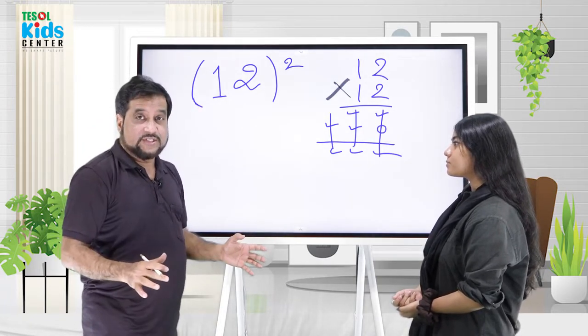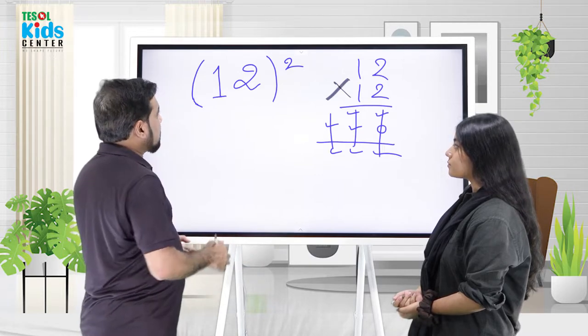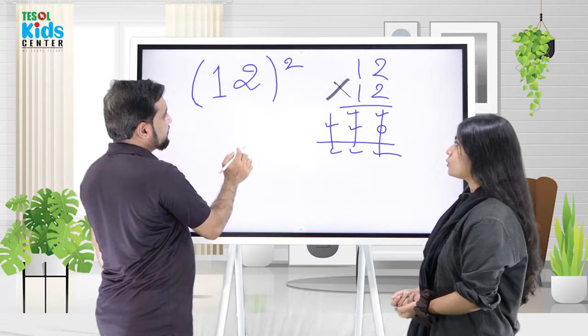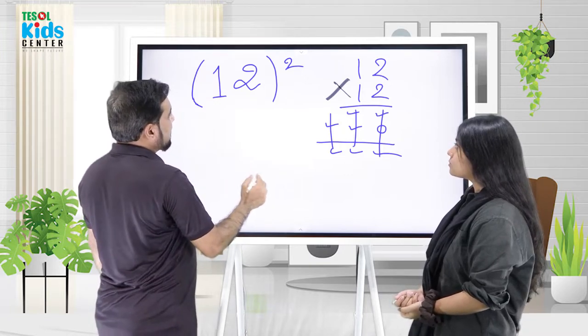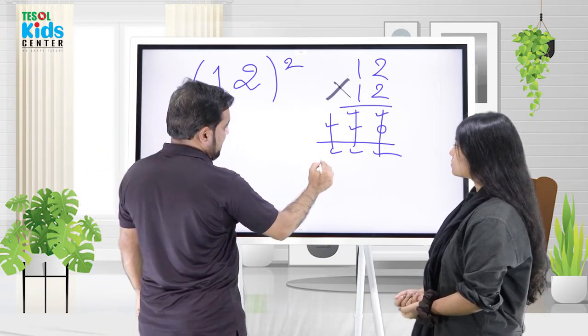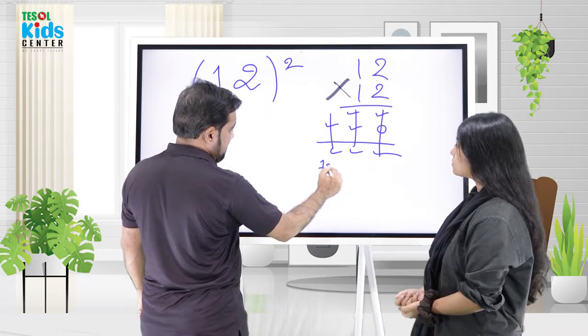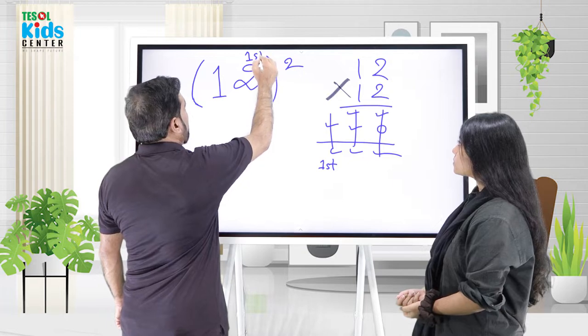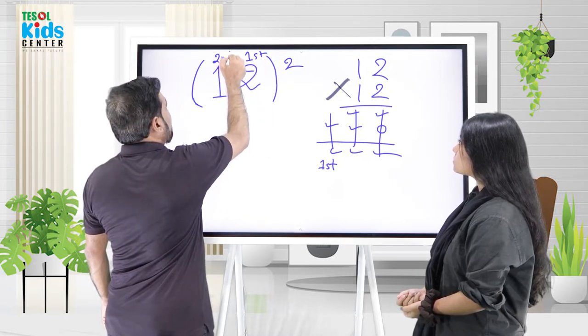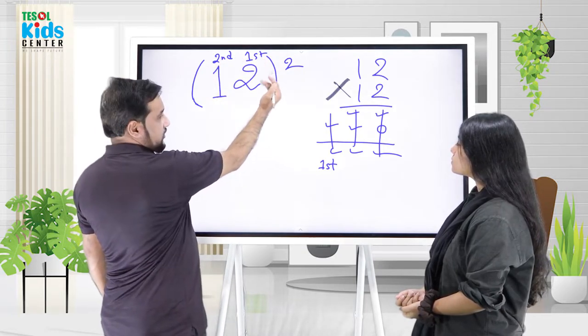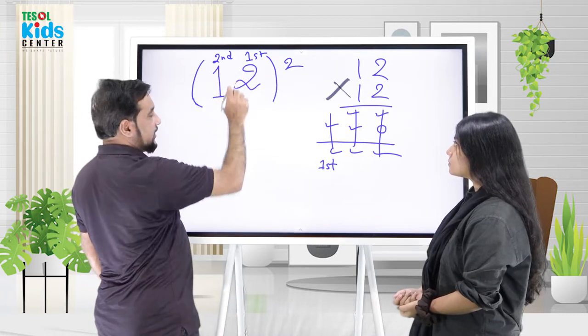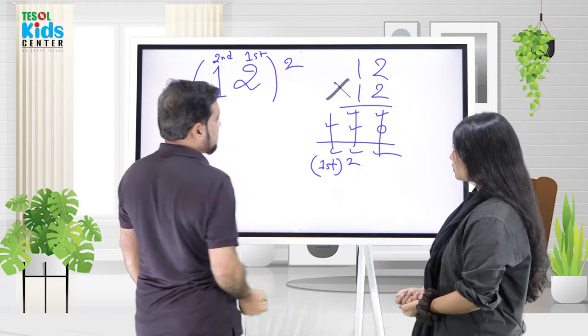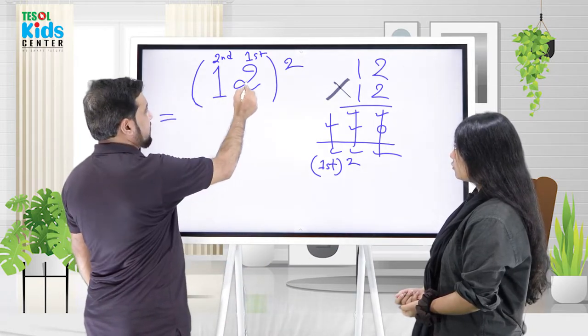We have two digits here: the first digit is 1 and the second digit is 2. First, we square the second digit. So the square of 2 is 4. Write that down.